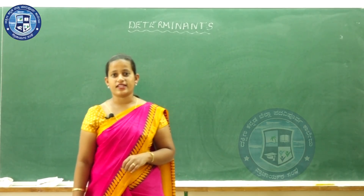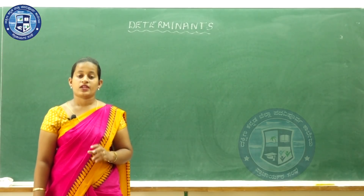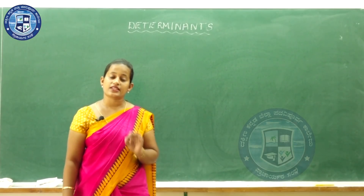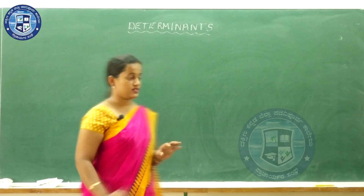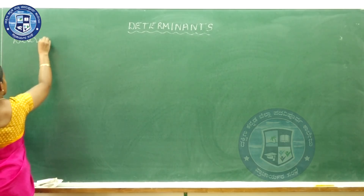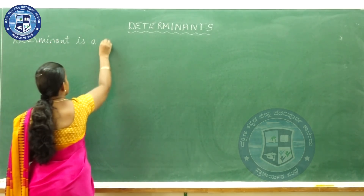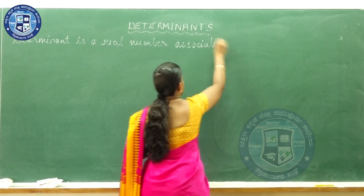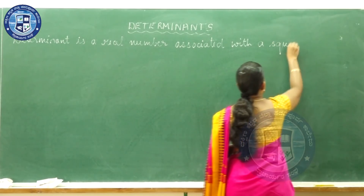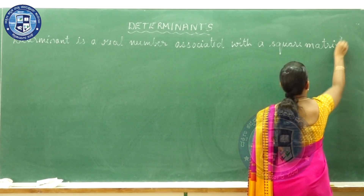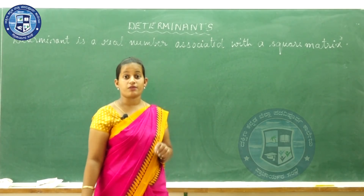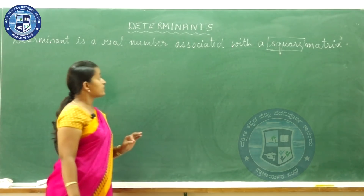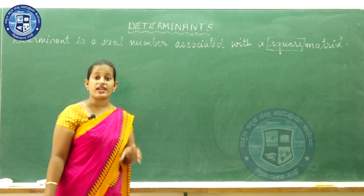Hello students, let us now study about determinants. So what is a determinant? A determinant is nothing but a real number associated with a square matrix. You have already studied matrices. When we study determinants, it is important for a matrix to be a square matrix, so we consider only square matrices. Every square matrix has a determinant.